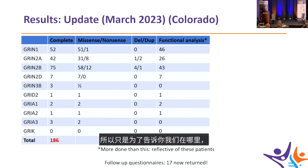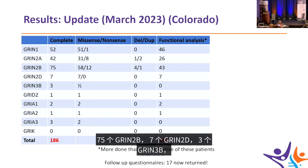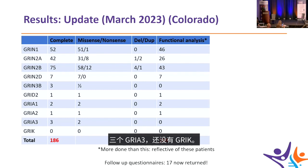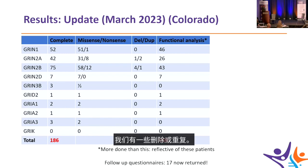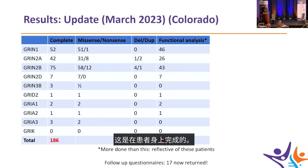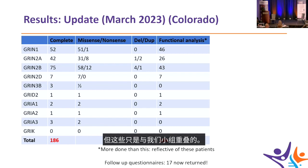At the University of Colorado, current patient counts include: 52 GRIN1, 42 GRIN2A, 75 GRIN2B, 7 GRIN2D, 3 GRIN3B, 1 GRID2, 1 GRIA2, 3 GRIA3, and no GRIKs yet. These break down into missense, nonsense, and deletion/duplication variants. Functional analyses overlap with approximately 650 variants analyzed in Steve's lab overall.